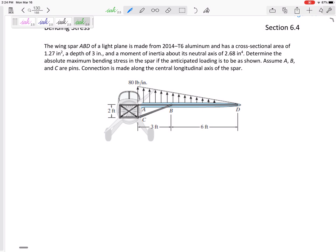Alright, so this one we've got a light plane wing spar with a distributed load. It's made up of aluminum with a cross-sectional area of 1.27 inches squared, a depth of 3 inches, and moment of inertia about the neutral axis of 2.68. Determine the absolute maximum bending stress in the spar if the anticipated loading is to be as shown, with A, B, and C as pins.